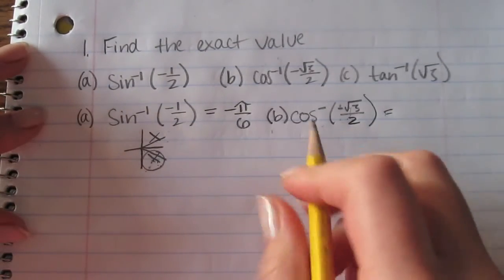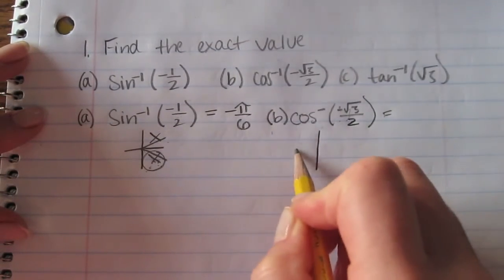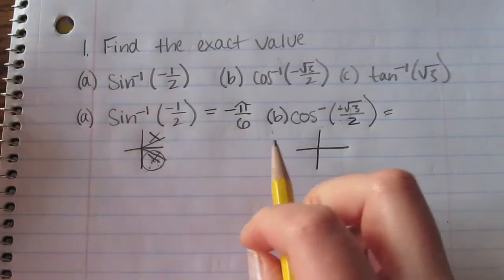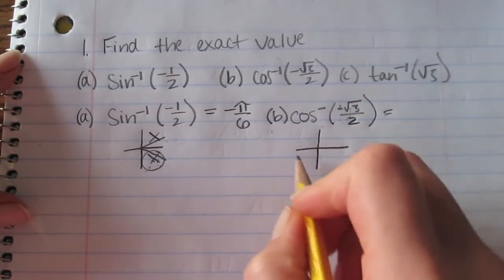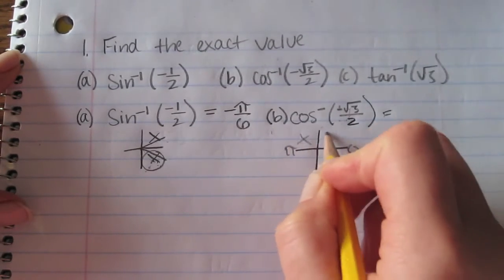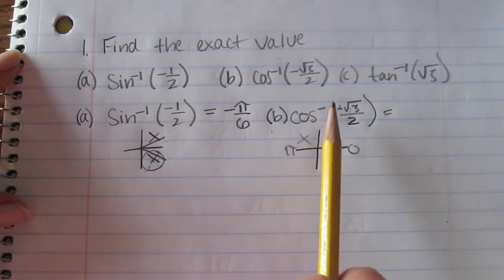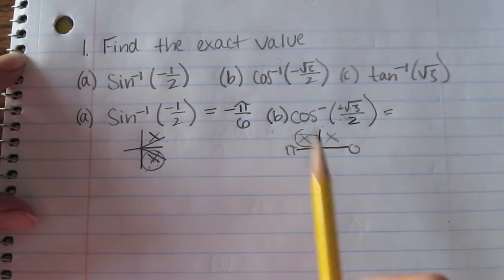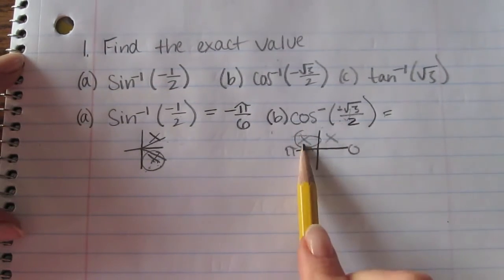Now to check where it will be, we know the range is between 0 and π. We have negative, so cosine is negative in quadrant 2.